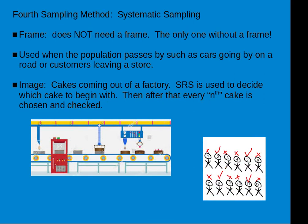The fourth sampling method is systematic sampling. This does not need a frame — it's the only one that does not need a frame. We use this when the population maybe passes us by, such as cars going by on a road, or customers leaving a store, or fish swimming in a river. The cake image here is cakes coming out of a factory. SRS is used to decide which cake to begin with, and then after that we check every nth cake — like every 7th cake — as it passes by.